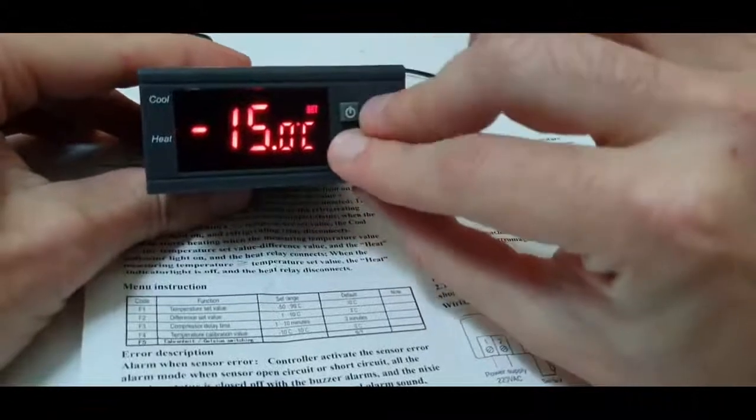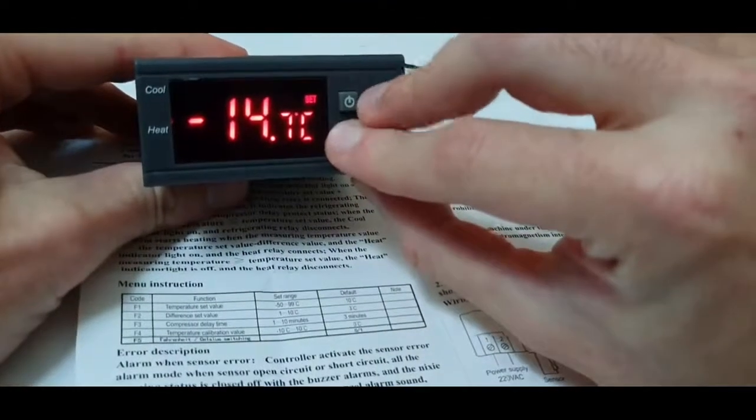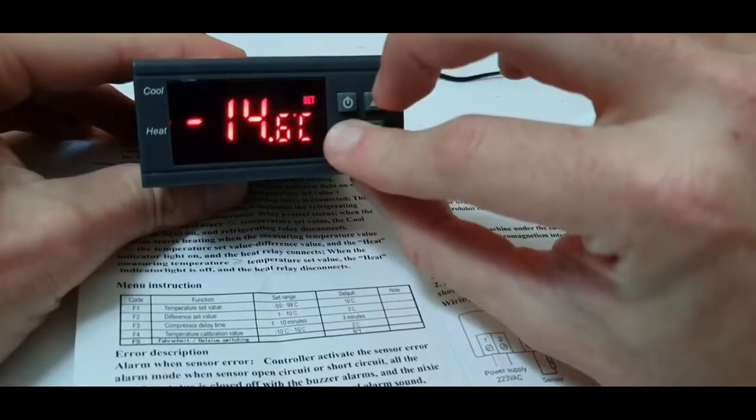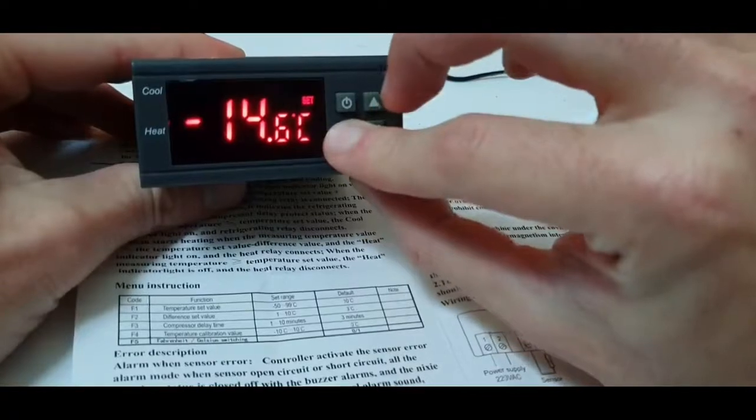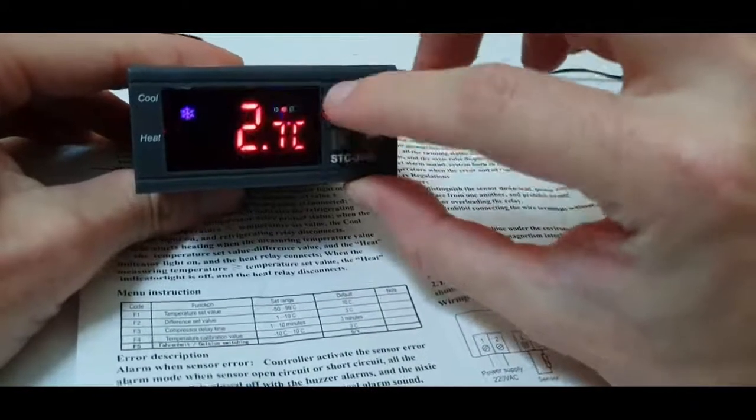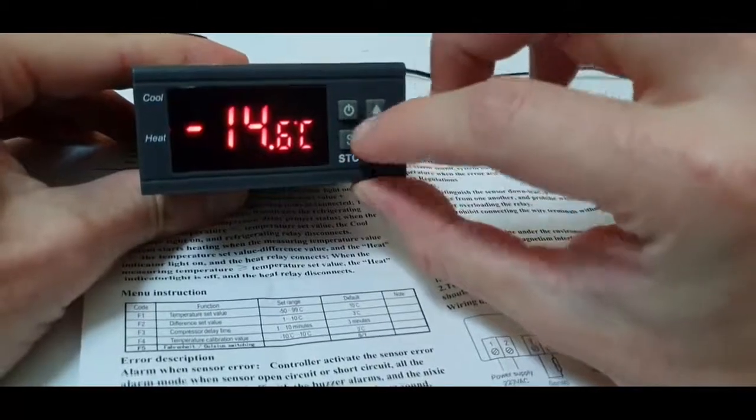Then, while clicking on S, click on the arrow buttons to change it. Once done, click on the S button, then the power button, and you're done. Hope you found this useful.